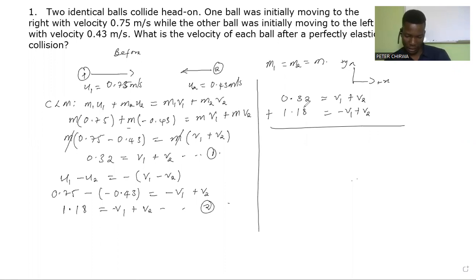What we have is 1.5 equal to negative v1 plus v1 which gives us zero and we're going to have two v2. We divide by two and then v2 is going to be equal to 0.75. The standard units is meter per second.